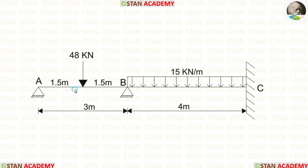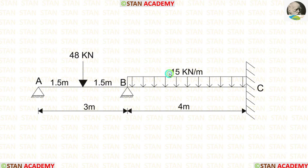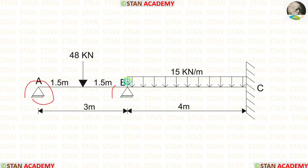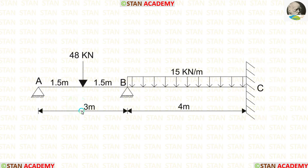In span AB there is a point load of 48 kN acting at the center. In span BC there is a uniformly distributed load of 15 kN per meter acting for the full span. At point A and point B there are hinged supports, and at point C there is a fixed support. Span AB is 3 meters long and span BC is 4 meters long.